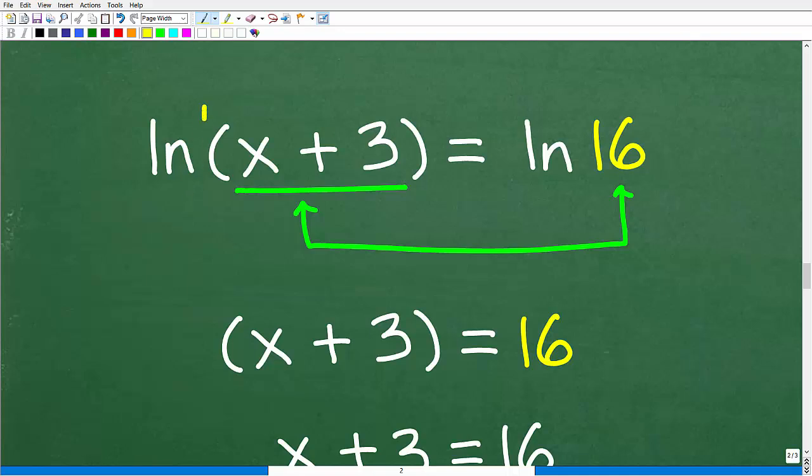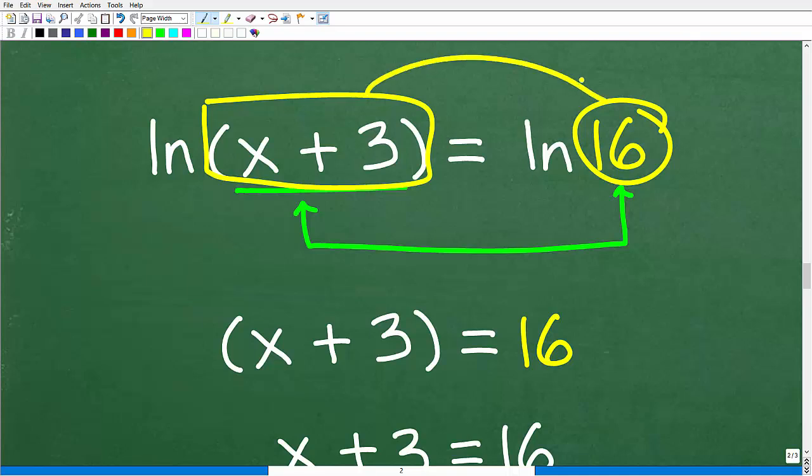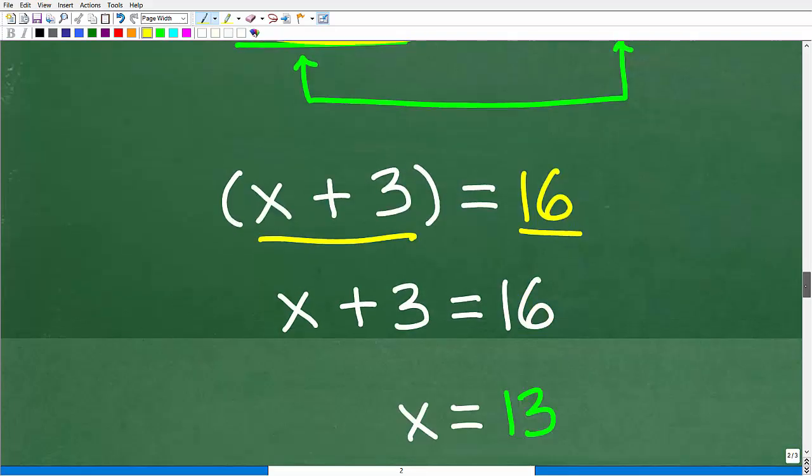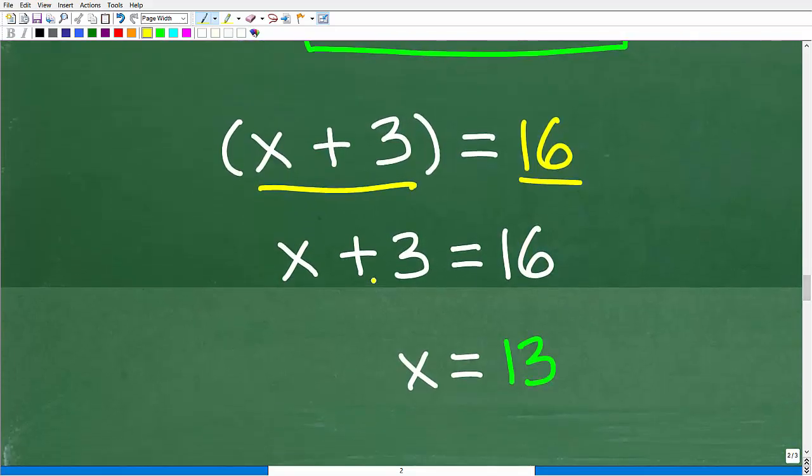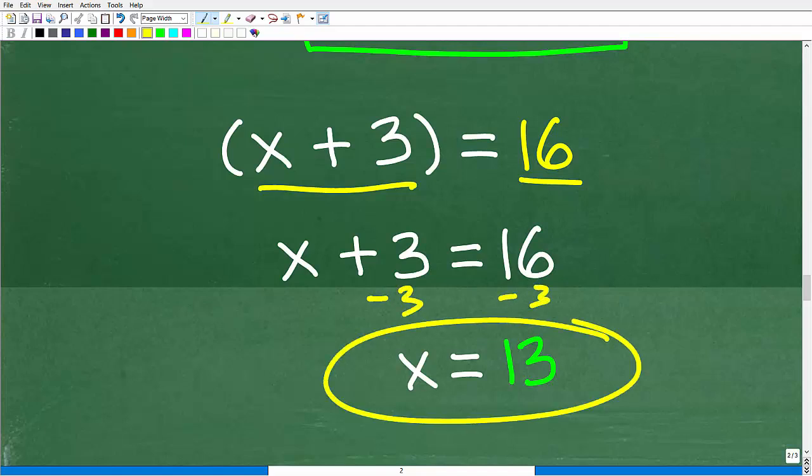Let's go ahead and finish up this problem because this is super easy now. The ln of this thing is equal to the ln of 16. Well, this must be equal to that. So let's go ahead and just equate those two, x plus 3 is equal to 16, and solve for x. So we have x plus 3 is equal to 16. All we have to do is subtract 3 from both sides, and we get x is equal to 13.